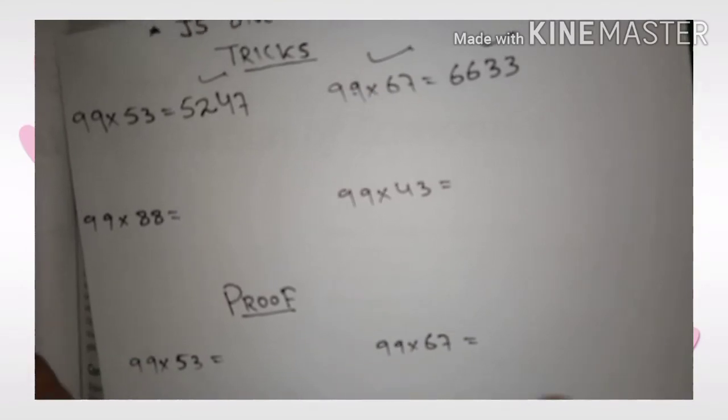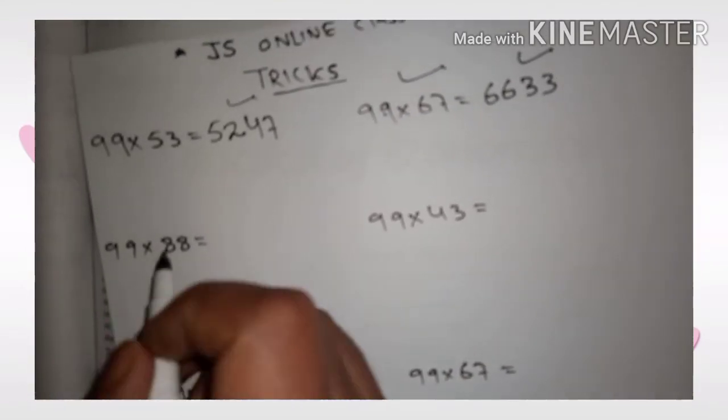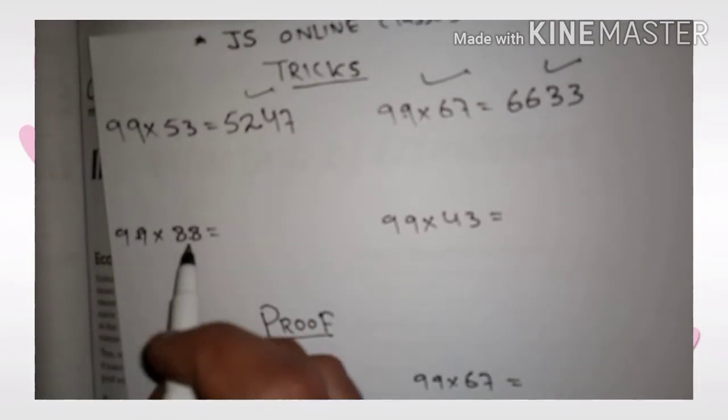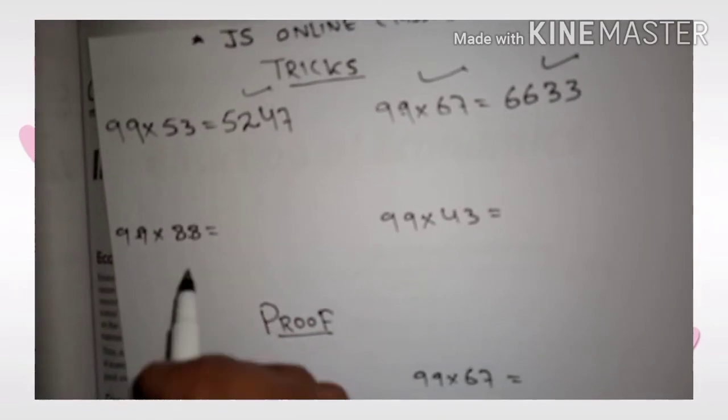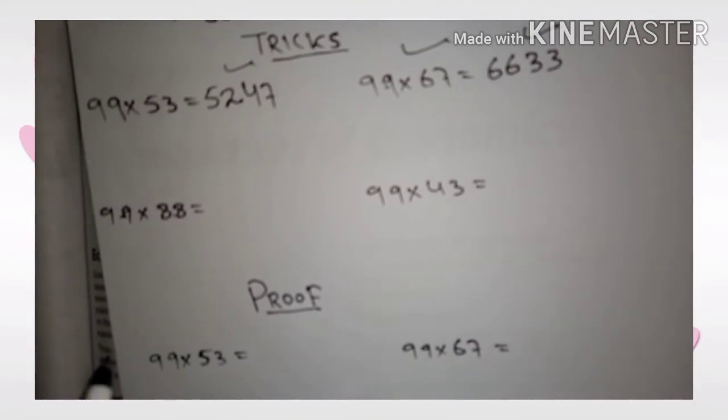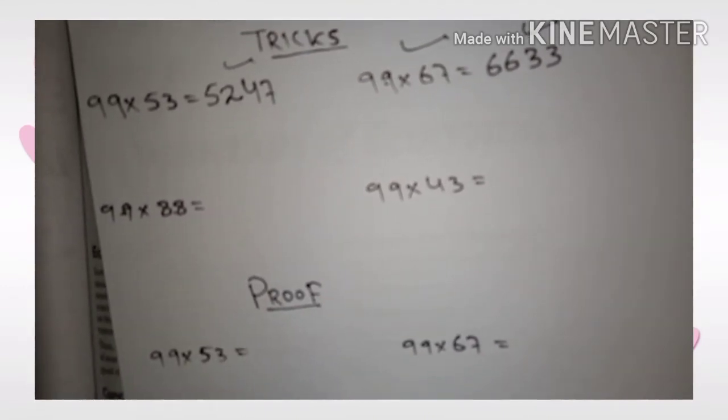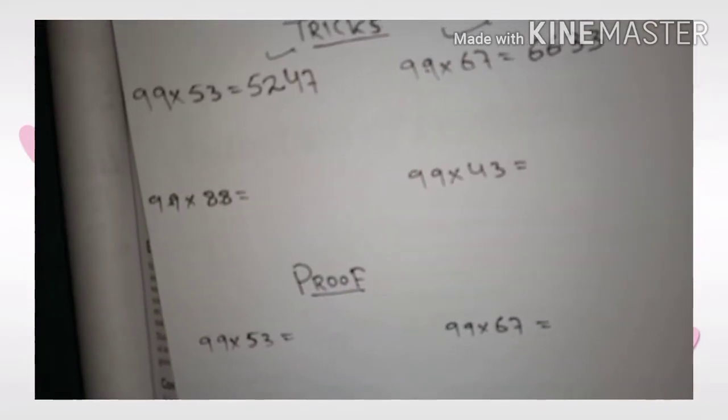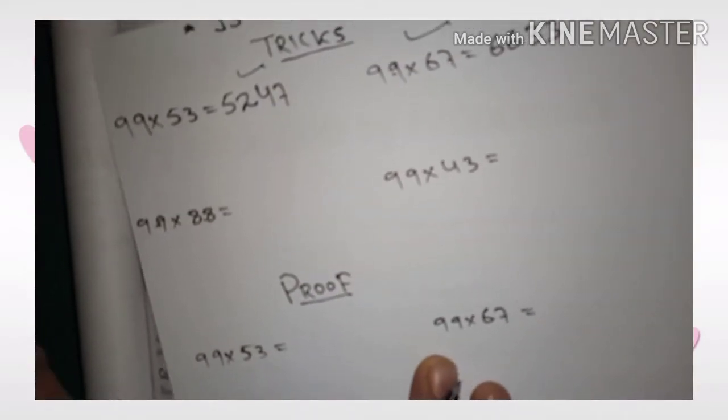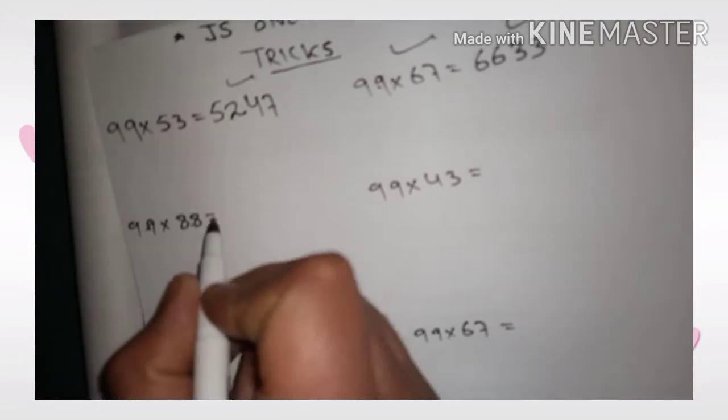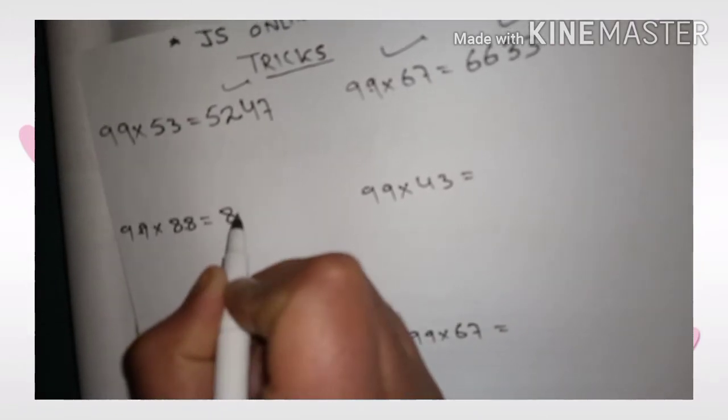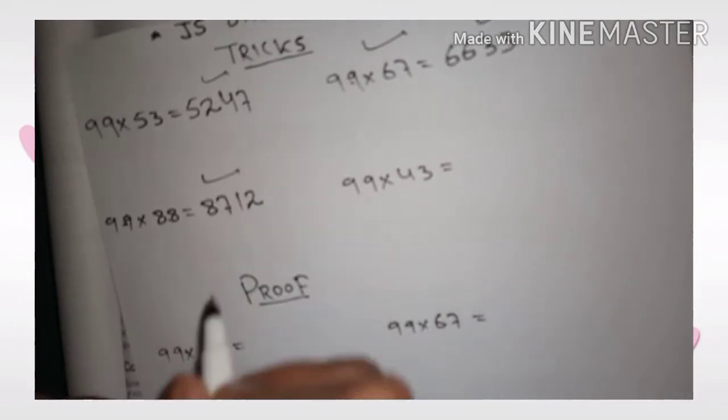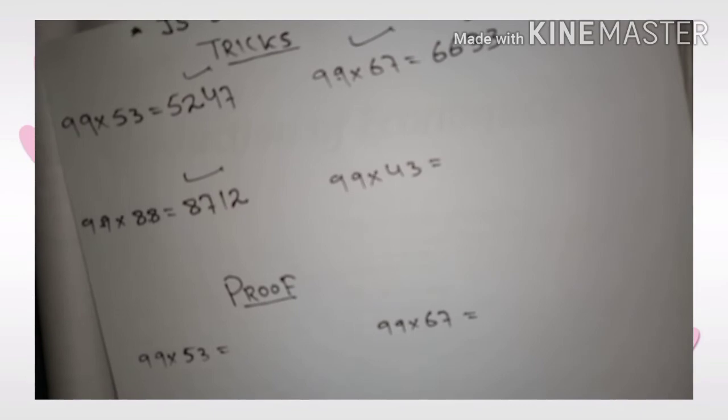Just be with me. It is 99 into 88. When you multiply 99 into 88, it will take almost two or one minute, but no, I am solving this question just in a second. Yes, I am solving it in a second.